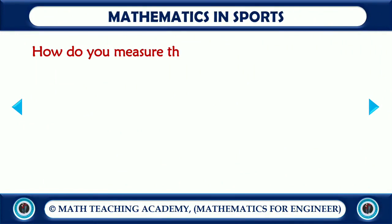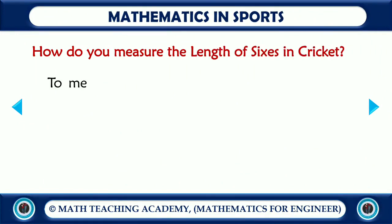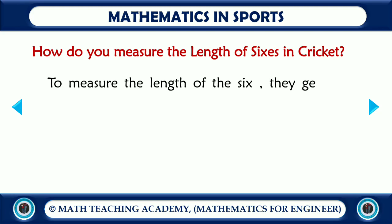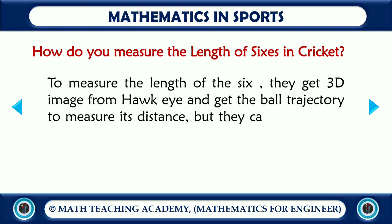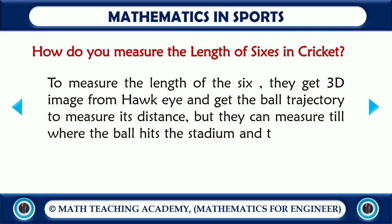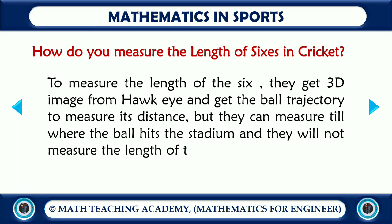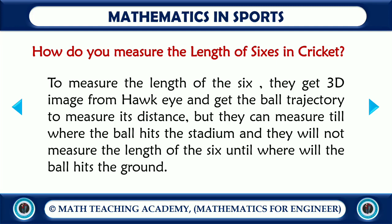How do you measure the length of a six in cricket? To measure the length of a six, they get a 3D image from Hawk-Eye and get the ball trajectory to measure its distance. However, they can only measure until where the ball hits the stadium — they do not measure the length of the six until where the ball would hit the ground.